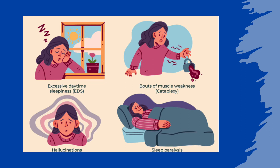The exact cause of narcolepsy is unknown, but people with type 1 narcolepsy have all been shown to have low levels of the neurochemical hypocretin, which regulates wakefulness and REM sleep. When hypocretin levels are particularly low, people experience cataplexy. Exactly what causes the loss of hypocretin-producing cells isn't known, but experts suspect it is due to an autoimmune reaction in which the body's own immune system destroys those cells responsible for producing hypocretin.